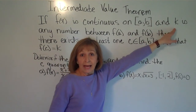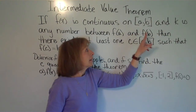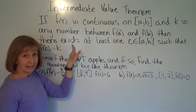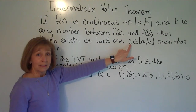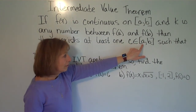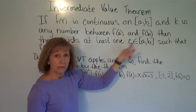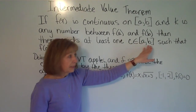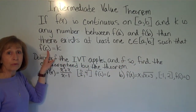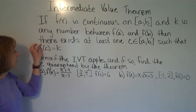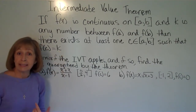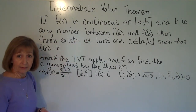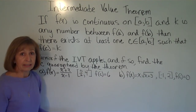That number k has to be between the output at the left endpoint and the output at the right endpoint. Then there exists at least one c in the closed interval from a to b such that if you run that number through the function, the output will equal k. So you're guaranteed at least one — there could be more than one, but you're guaranteed at least one.